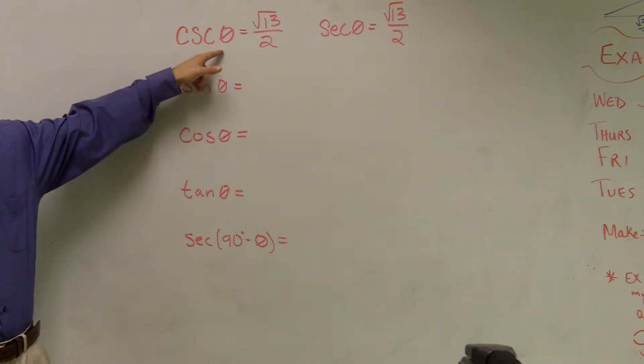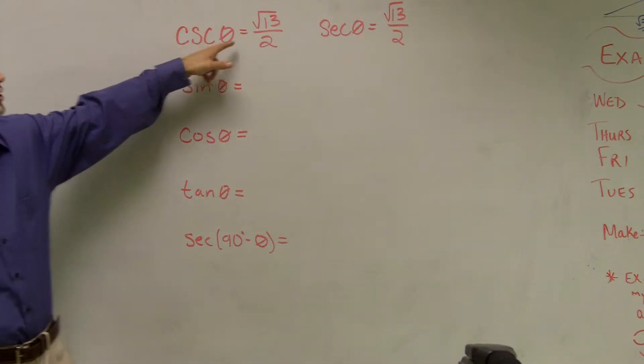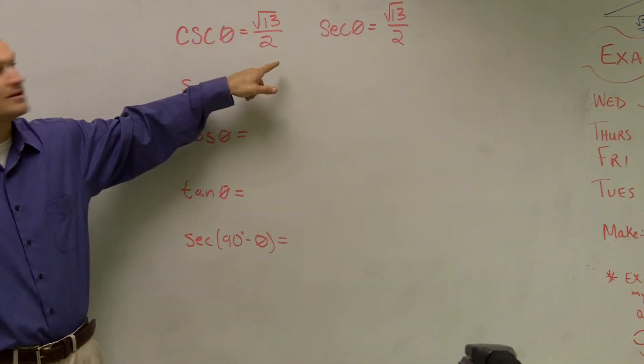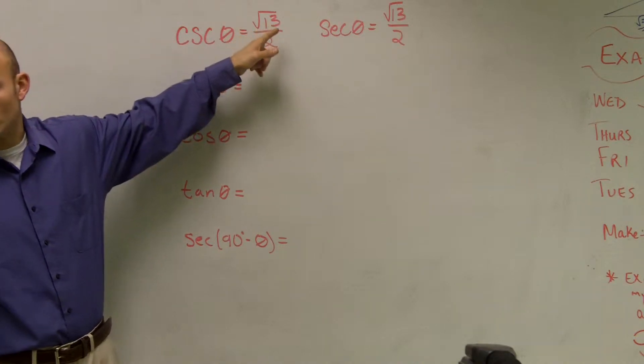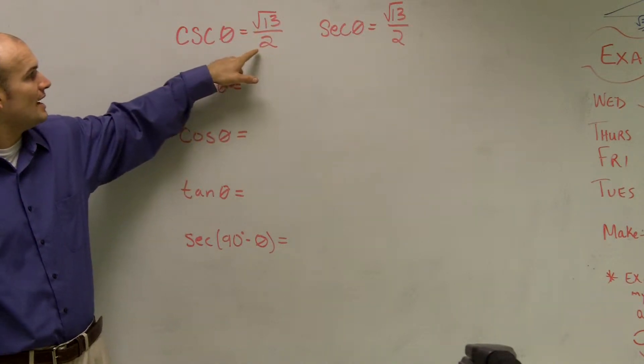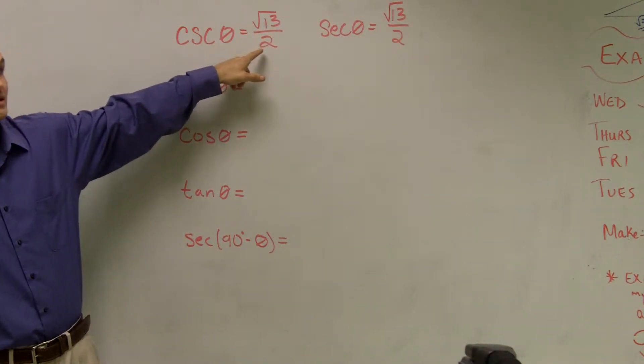Because remember, cosecant is our hypotenuse over our adjacent, right? So therefore, you can say that the square root of 13 is the hypotenuse and our adjacent side is 2.